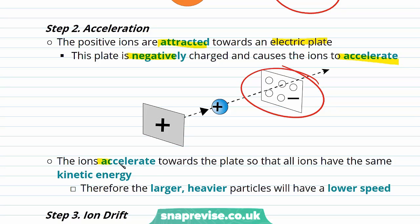The ions accelerate towards the plate so that all the ions have the same kinetic energy and therefore the large and heavier particles will have a lower speed and the smaller lighter particles will have a higher speed.